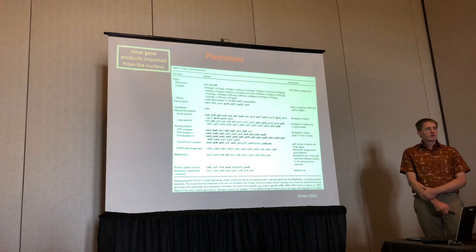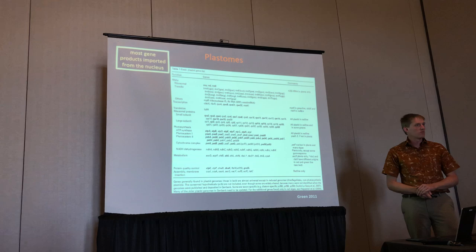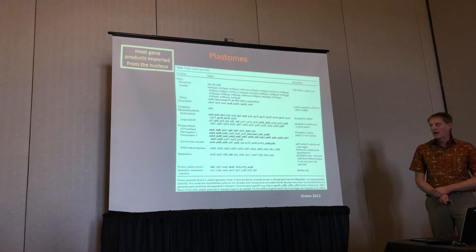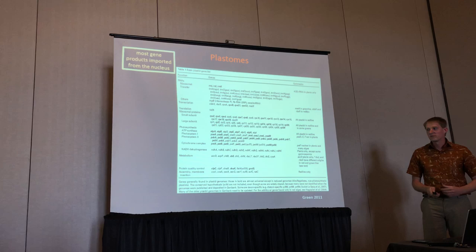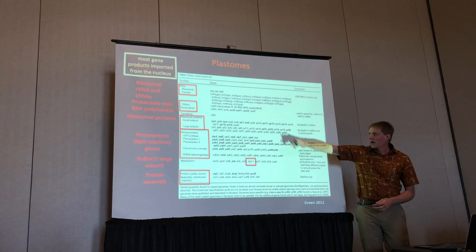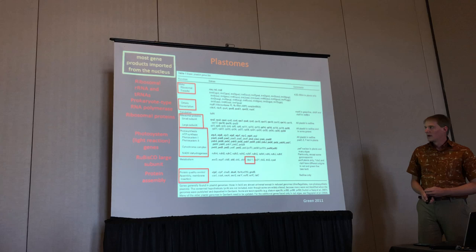Talking about the plastome — these are the chloroplast genomes that are in plants. Just a quick rundown of what exactly those are. The origin of these chloroplast genomes was from an endosymbiosis event a very long time ago. Since then, most of the genes that were in the genomes of those ancient bacteria have moved into the nucleus, but many are still retained. I want to draw your attention to these specific classes of genes that are in the chloroplast genome, which can really be divided into a couple of different categories.